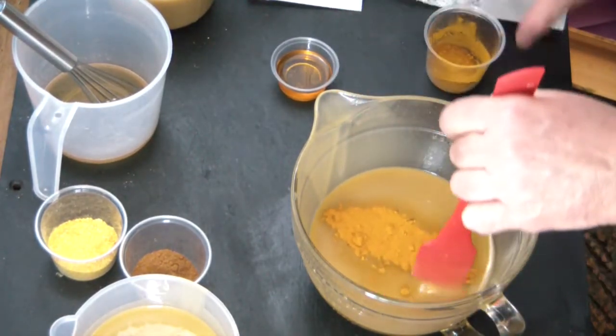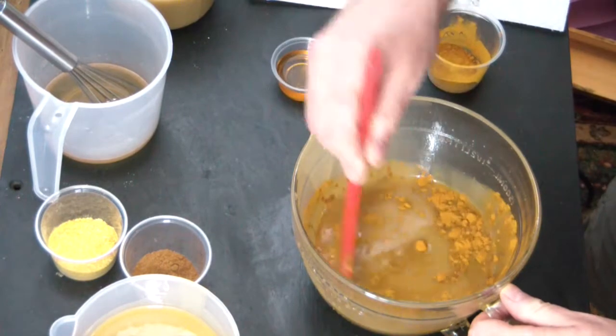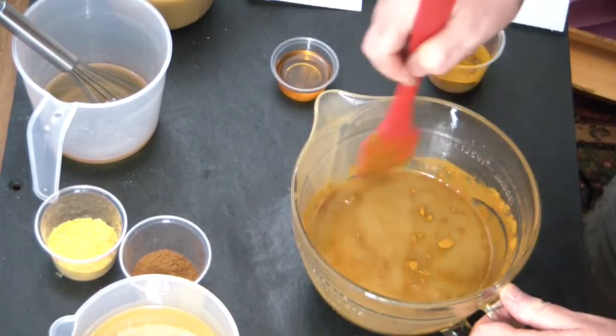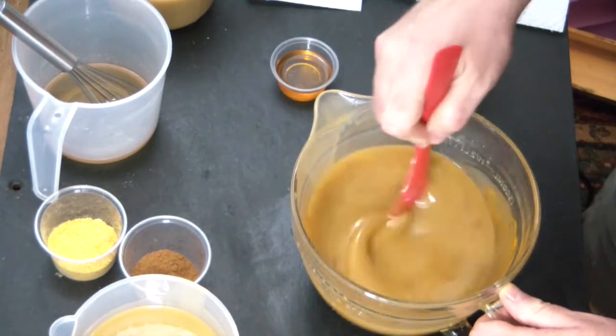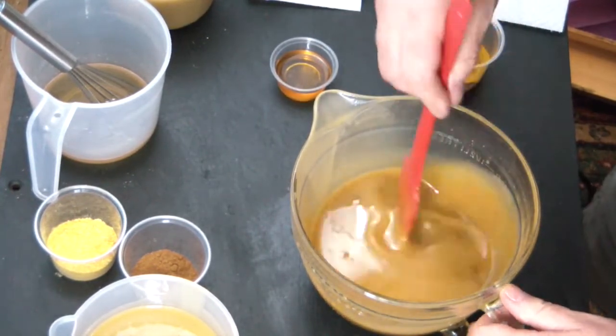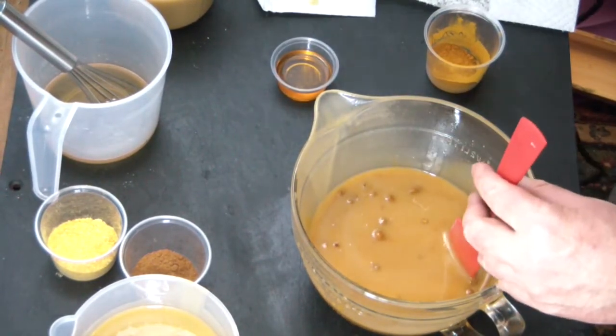There is my turmeric. You know what, I forgot to tell you that one container down there that I said has cinnamon also has rose hips in it that have been ground up to a very fine powder. I forgot to mention that.